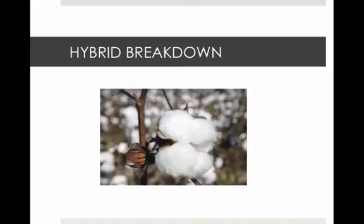Hybrid breakdown is when sometimes two species create fertile offspring in the first generation, but the second generation are not healthy or fertile. This is common in plants. The biological species concept is based on reproductive barriers, but there are other species concepts.